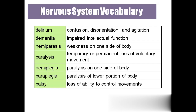'Dementia' involves impaired intellectual function — like reasoning, problem solving, and judgment — everything will be defective for people with dementia, and memory is also affected. 'Hemiparesis' means weakness of the entire one side of the body — 'hemi' means half and 'paresis' means weakness of the body.